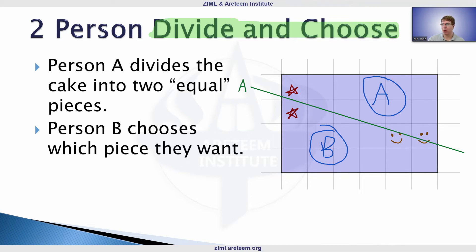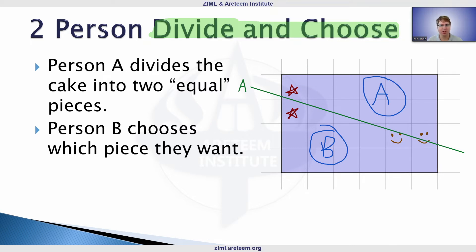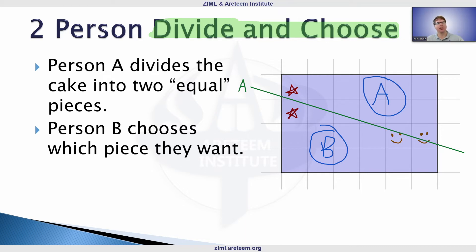This two-person divide and choose method is very simple but very powerful. You can apply it to many things — for example, arguing with your sibling about chores: person A divides the chores into two equal lists, happy to do either half, and the second person chooses which half they want. You can see how this could be studied in economics as well.